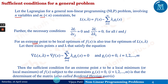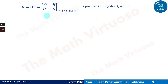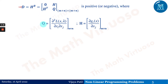The Bordered Hessian matrix, denoted D (or in some books written as the bordered matrix with 0, H, H^T, Q), is of order (m+n) × (m+n). The capital D or bordered Hessian is positive or negative, where Q is the matrix ∂²L/∂x_i∂x_j of size n×n, and H is the matrix ∂g_i/∂x_j of size m×n. We will go into detail with specific examples involving a few variables and constraints.